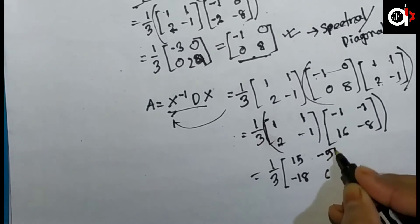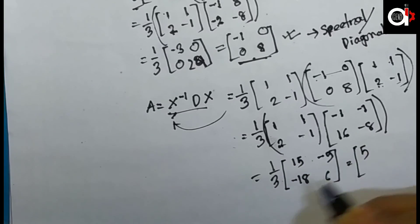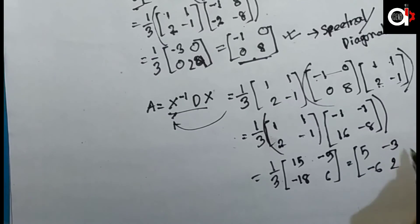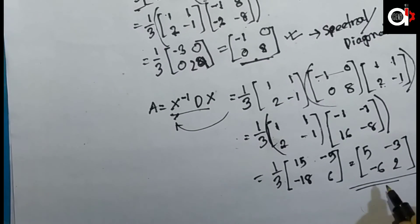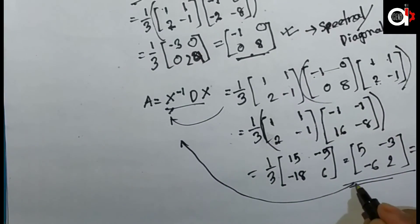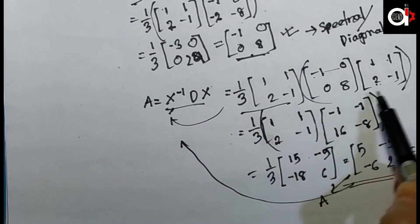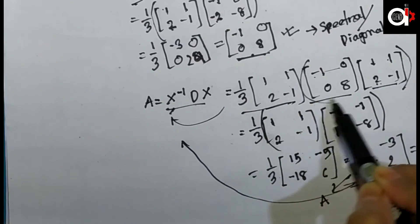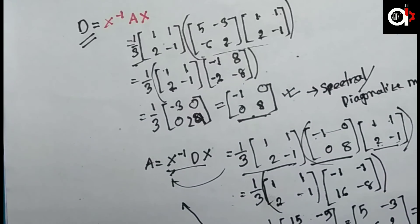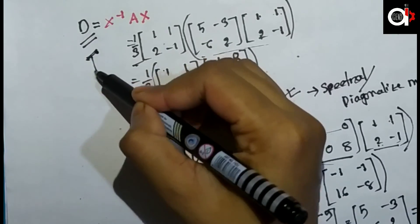Dividing by 3, we recover [5, −3; −6, 2], which is exactly our given matrix A. This confirms that X × D × X⁻¹ = A. So multiplying the modal matrix by the spectral (diagonal) matrix gives back the original given matrix.